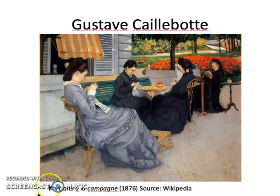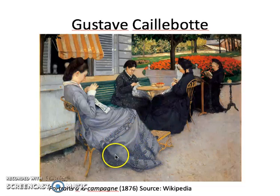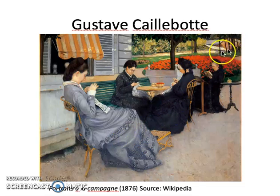Starting out, let's look at this image — Portrait à la Campagne. It was done in 1876 by Gustave Caillebotte. We can find a couple of different elements of art in this work. We can see that we have space — not just a very simple slice of space. We have a foreground with this woman here, and then that recedes back to our background, with this barn kind of hiding behind these trees.